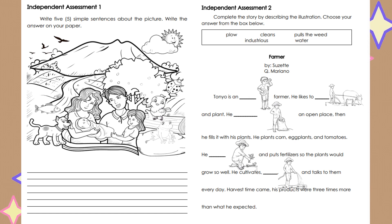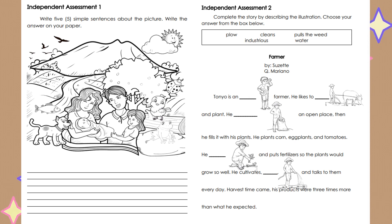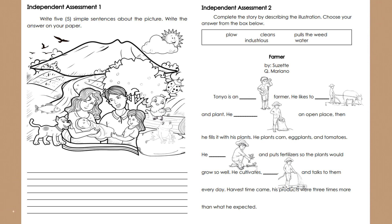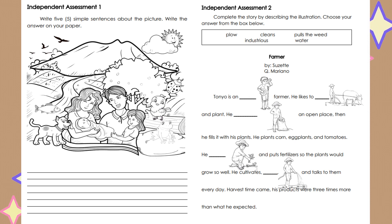For independent assessment 2, complete the story by describing the illustration. Choose your answer from the box below. The title of the short story is 'Farmer' by Suzette Q. Mariano. Toño is a blank farmer. He likes to blank and plant. He blank an open place, then he fills it with his plants. He plants corn, eggplants, and tomatoes. He blank and puts fertilizers so the plants would grow well. He cultivates blank and talks to them every day. Harvest time came. His products were three times more than what he expected.